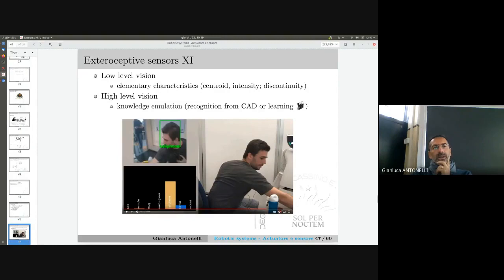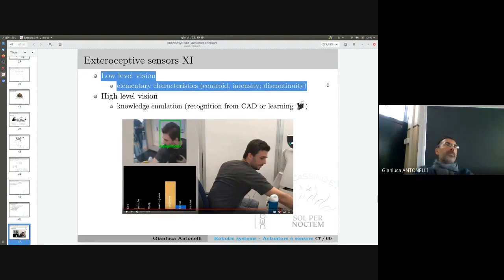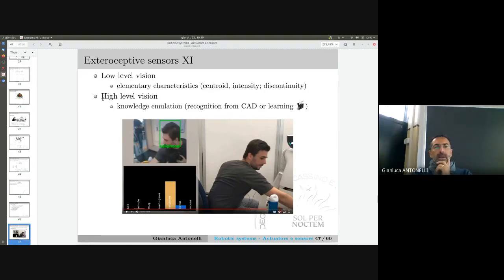When you use vision, you may have two different kinds of applications. There's low-level vision when you need to implement algorithms to detect, for example, the centroid of a position. If you have a conveyor belt and your robot needs to pick up an object, you just need to - if the belt is black and your object is gray - you make a gradient to compute the centroid of your object and you can grasp it easily. This is very easy, it's a kind of low-level vision. Then you have high-level vision where you want to understand what's going on.